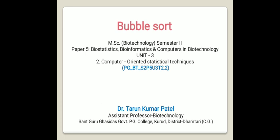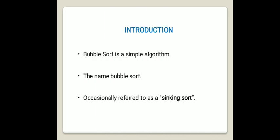This falls under Unit 3, second topic: computer-oriented statistical techniques. Bubble sort is basically a simple algorithm used mainly to sort a given set of elements provided in the form of an array with n number of elements. It is known as bubble sort because the largest element in the given array bubbles up towards the last place, or the highest index, just like a water bubble rises up to the water surface. Sorting takes place by stepping through all the elements one by one and comparing each with the adjacent element.